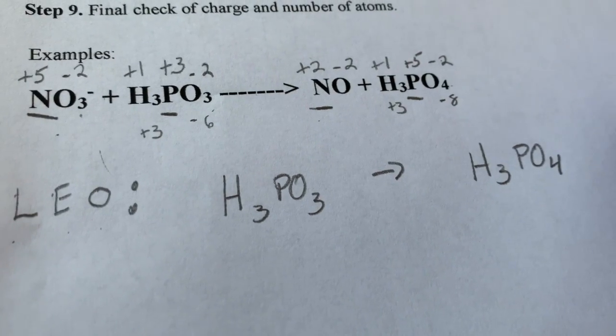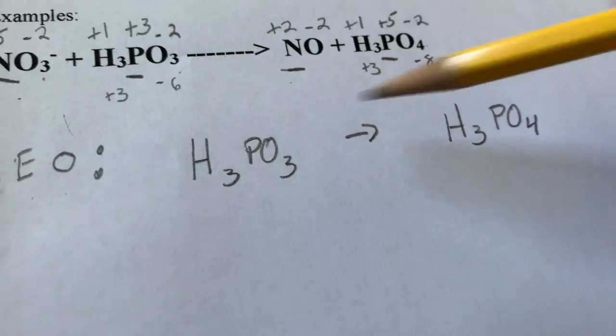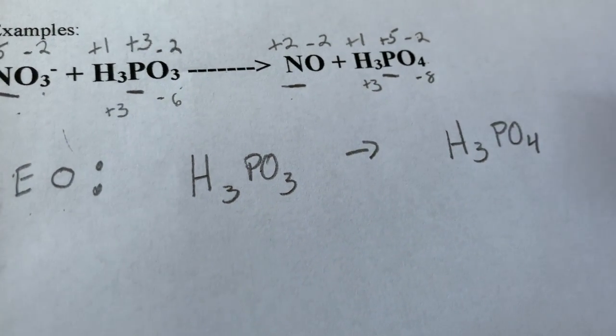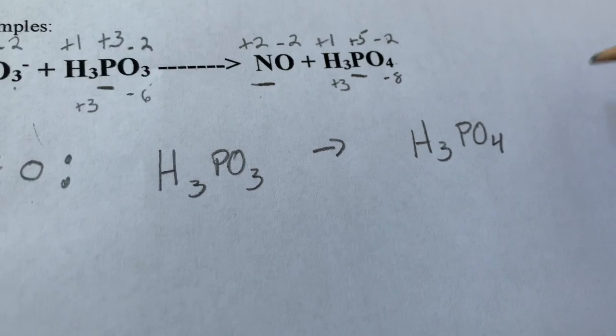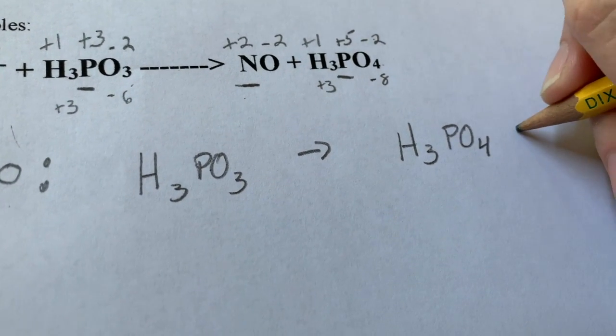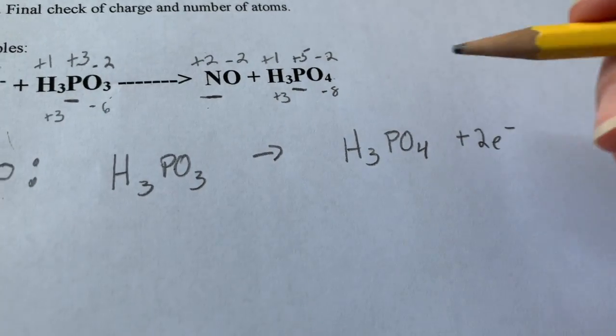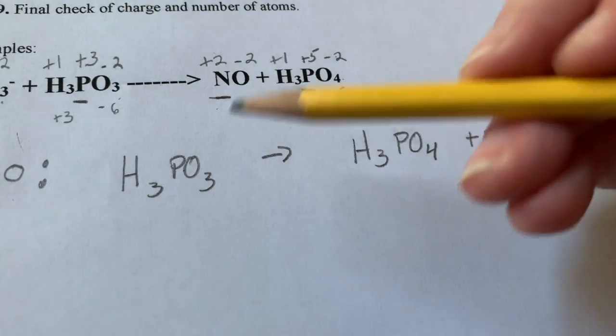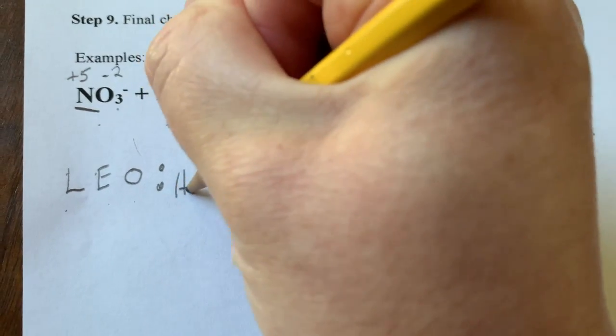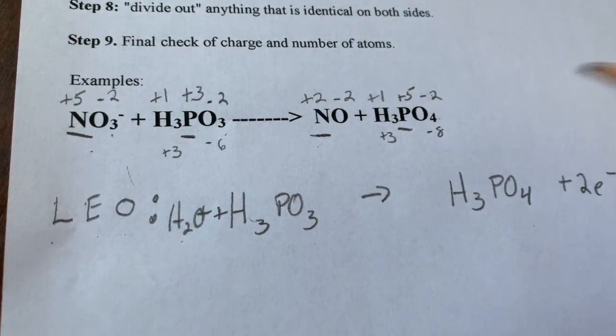My first step, if you're looking back at your steps, is to make sure that all elements other than oxygen and hydrogen are balanced. Well, my only element other than oxygen and hydrogen is phosphorus. I have one on the left. I have one on the right. Great. Now it tells you to deal with the electrons. Well, phosphorus went from plus three to plus five. So it lost two electrons, which means it produced two electrons. So plus two electrons. My next step is I'm going to balance out my oxygens and I balance oxygens, not with using coefficients, but with using waters. So I have three oxygens on the left. I have four on the right. So I'm going to go over here and I'm going to actually add a water. I can absolutely do that. So I added a water. Now my oxygens are balanced.